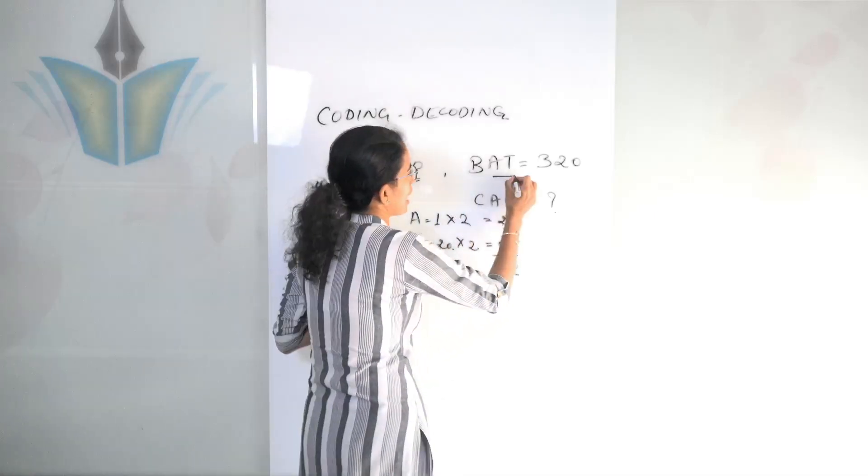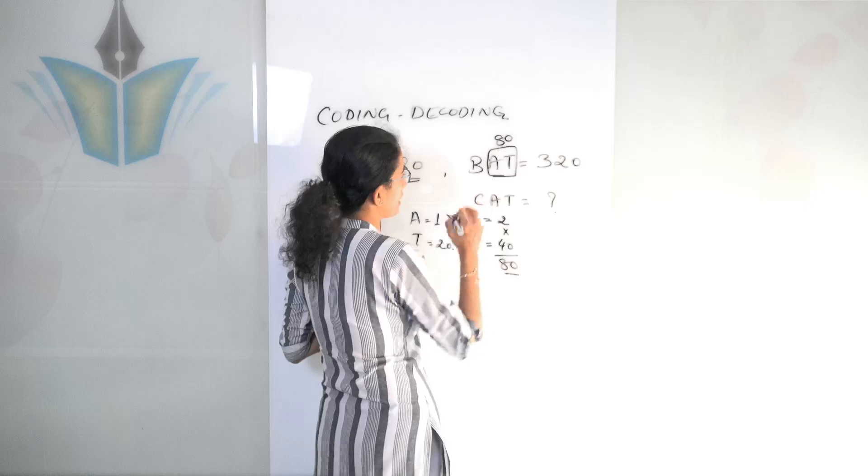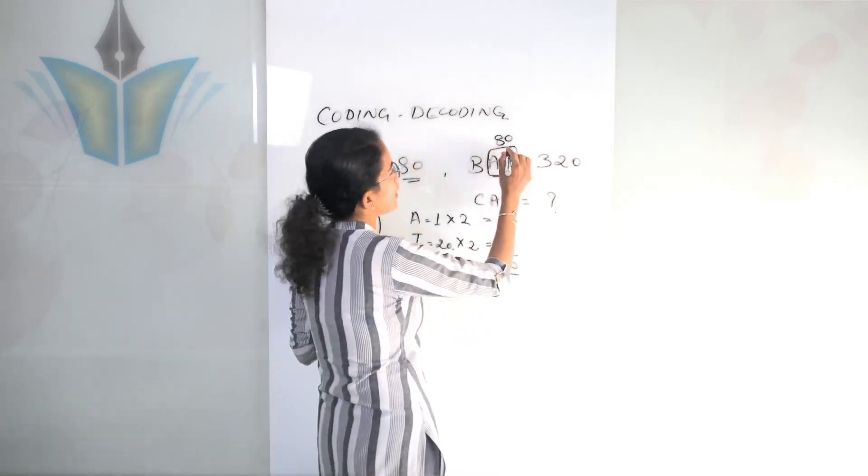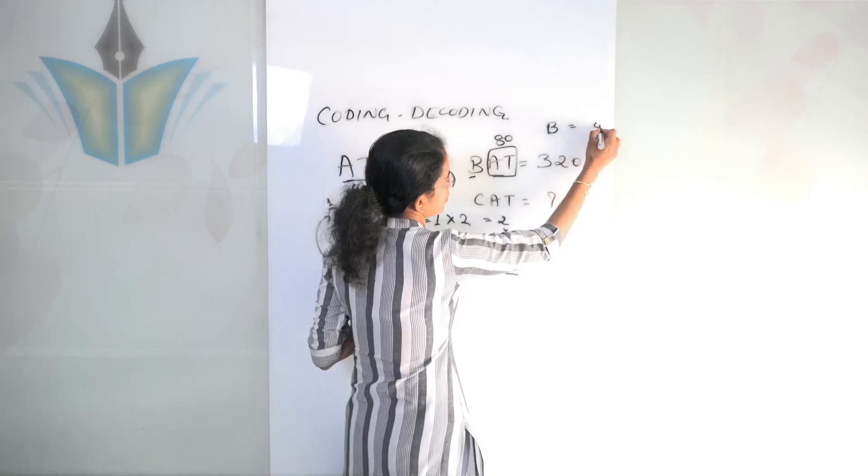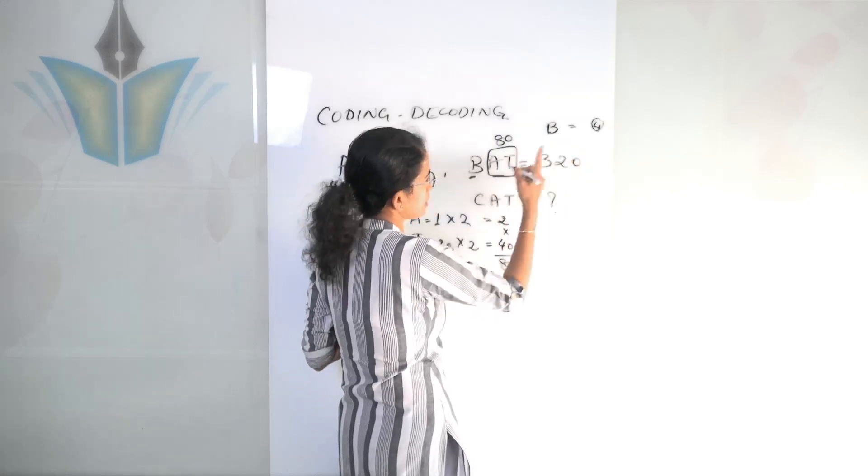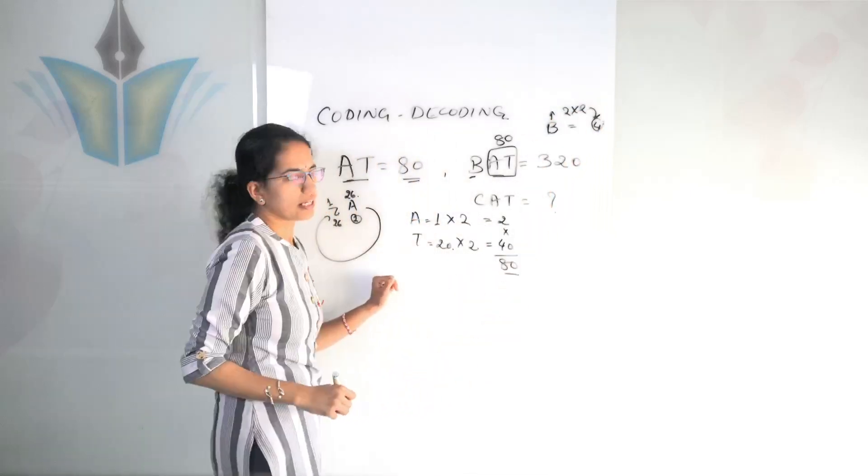Now, in this I substitute the value of 80. So this becomes 8080 from AT. So now B would be how much? B comes out to be 4 here, but originally B is 2. So since B is 2, I multiply it by 2 again and I get 4.